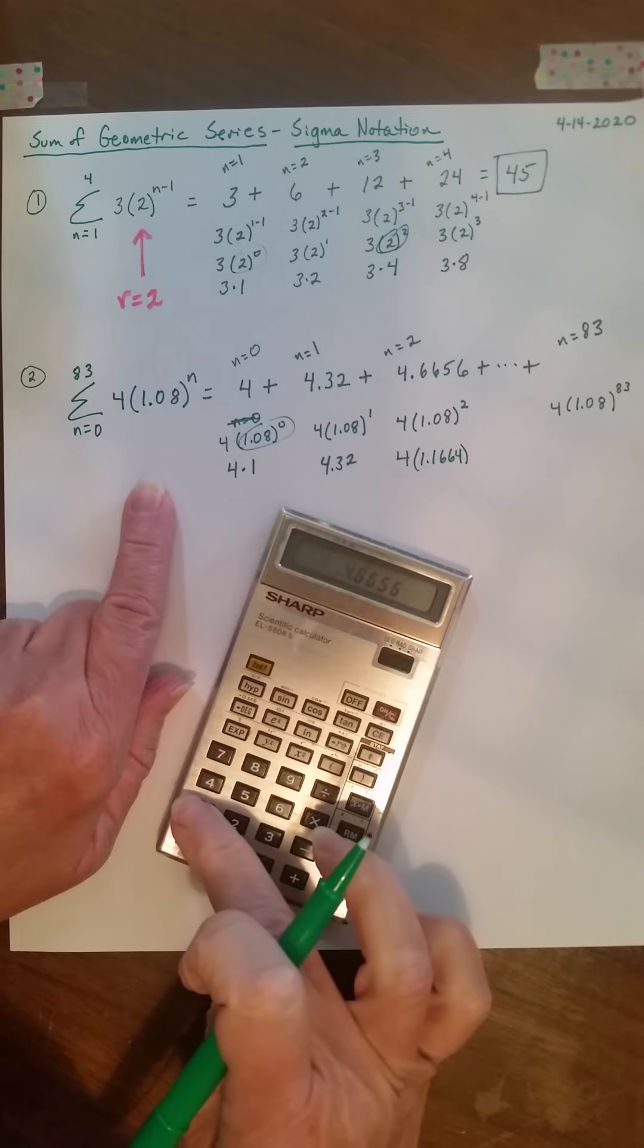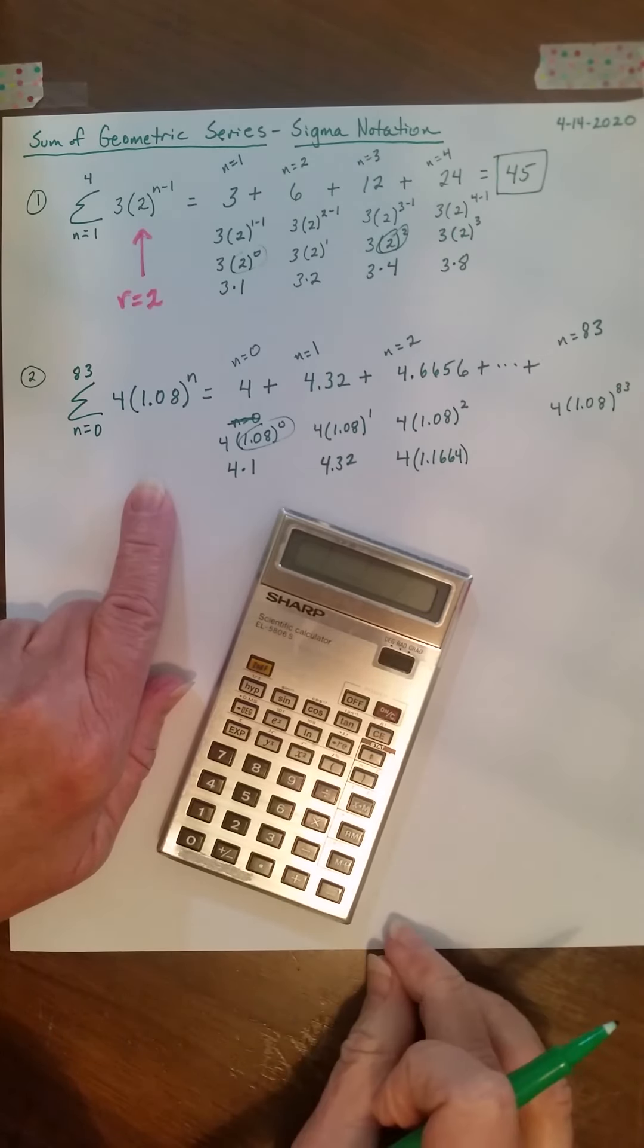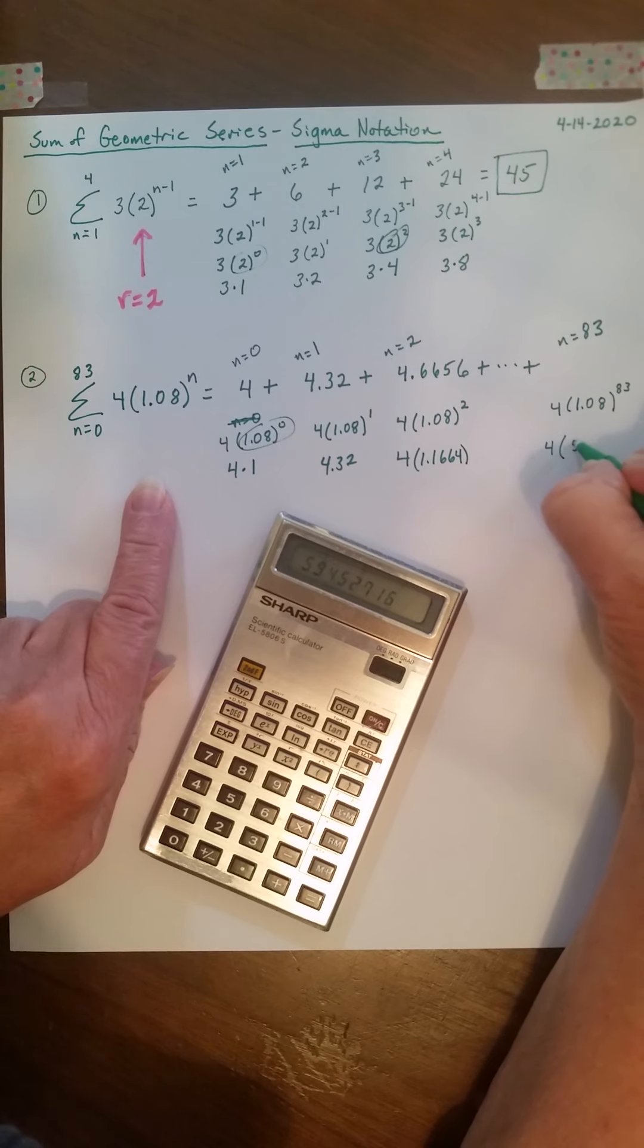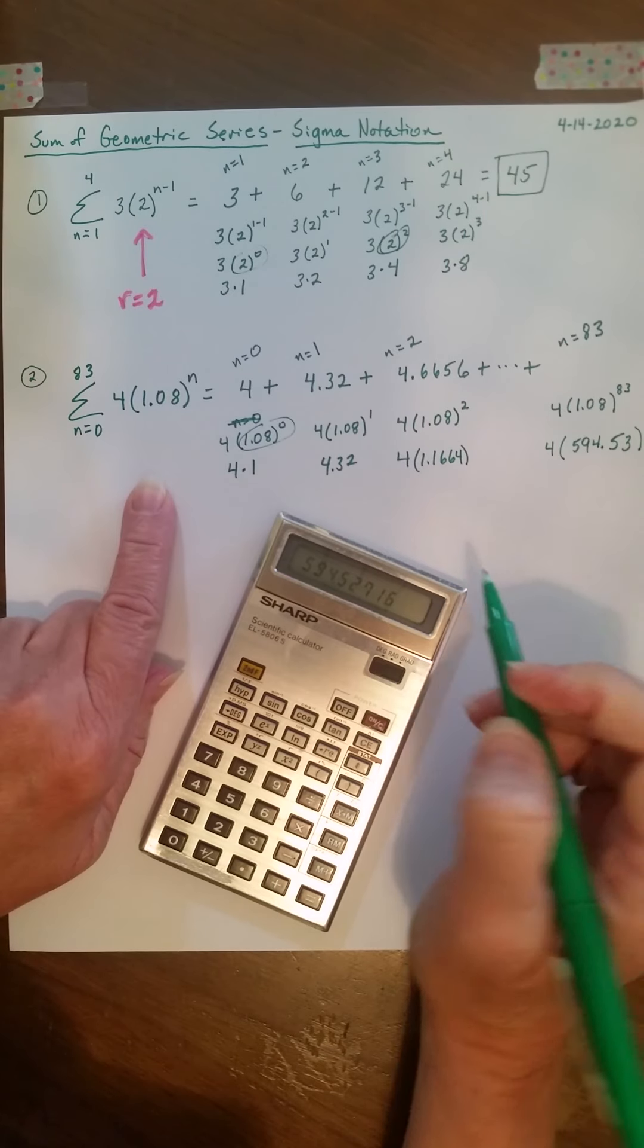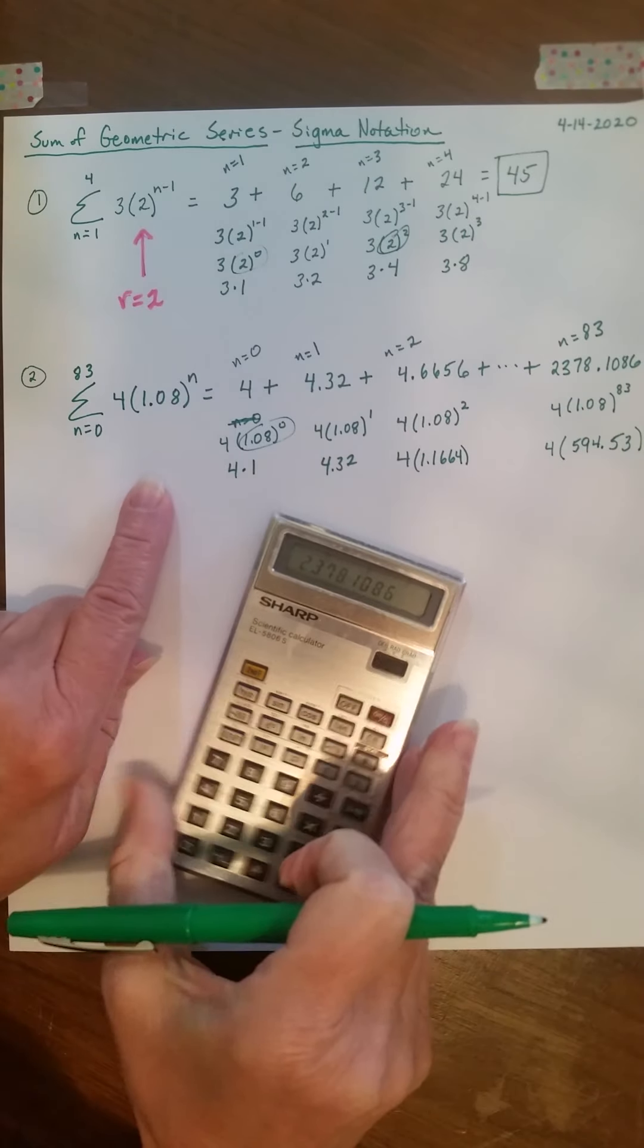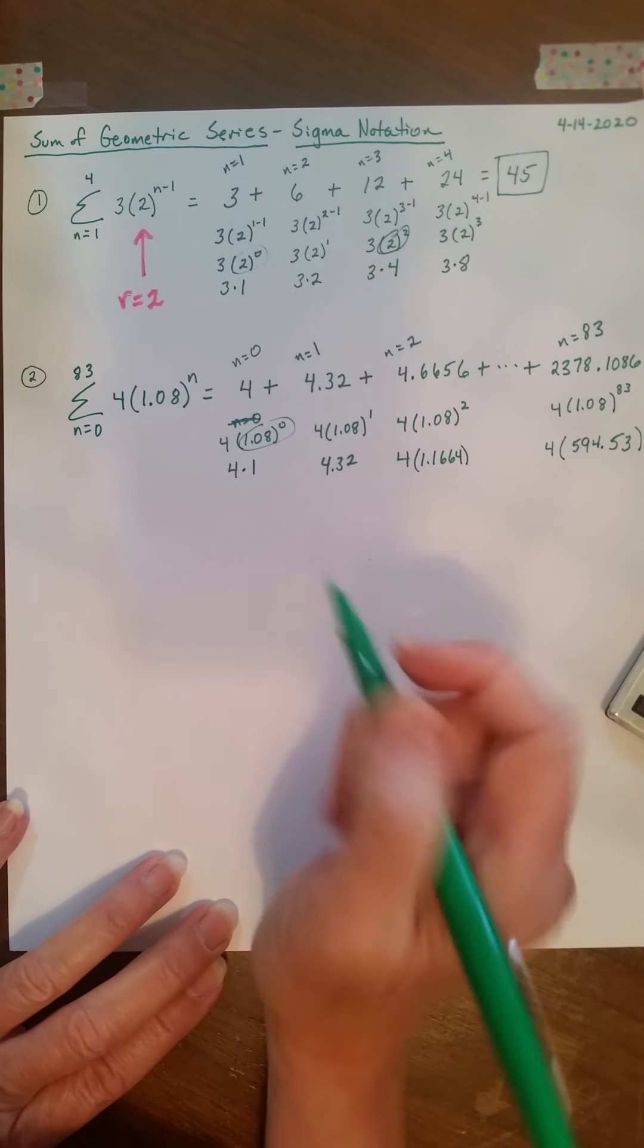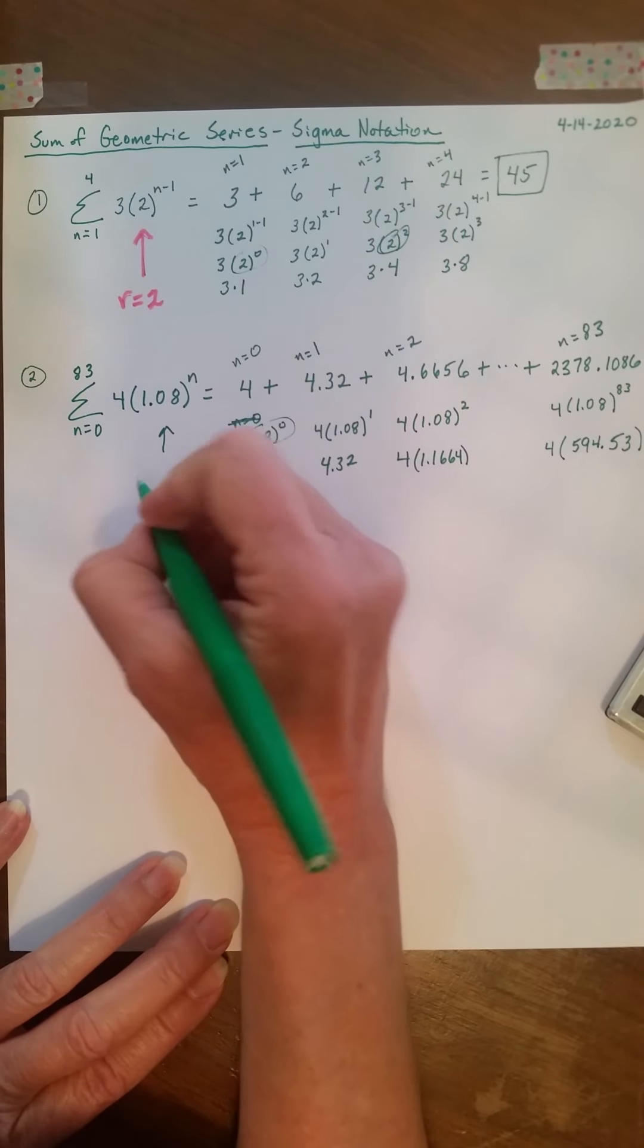1.1664. I'm going to times that by 4. And I get 4.6656 plus dot dot dot. And then I'm going to go to my last term. I'm going to plug in n equals 83. So I have 4 times 1.08 to the 83rd term. So, I'm sorry, to the 83rd power. So, 1.08 to the 83rd power. Okay, I get 594.53. I'm going to round it to two decimal places. Times that by 4. And I get 2378.1086. Okay. Now, we can see that this is geometric. And the common ratio, we're always multiplying by 1.08. This is our common ratio.